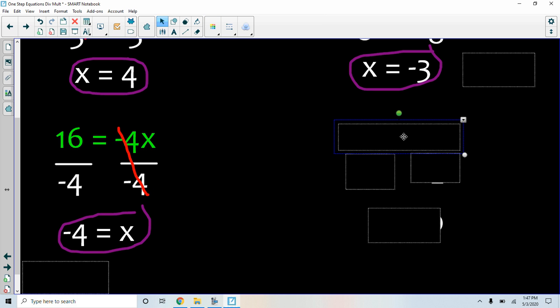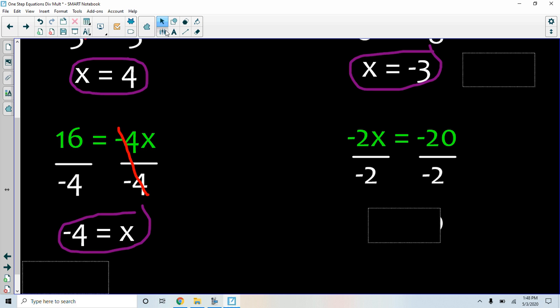We'll do one last one. I have negative 2 times x, so I need to divide by negative 2 on both sides. Negative 2 divided by negative 2 is 1. So I have 1x, again, I don't have to write the 1, equals negative 20 divided by negative 2 is positive 10.